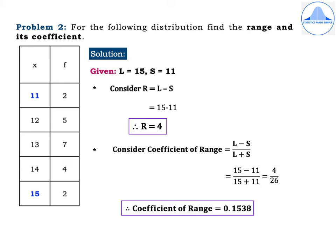Solution. Given the largest X value L = 15 and the smallest X value S = 11, as highlighted in the first column in blue. R = L − S = 15 − 11, therefore R = 4. The coefficient of range = (L − S) / (L + S) = (15 − 11) / (15 + 11) = 4 / 26, giving the coefficient of range as 0.1538.